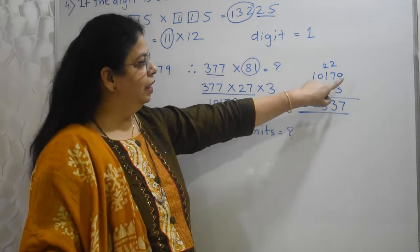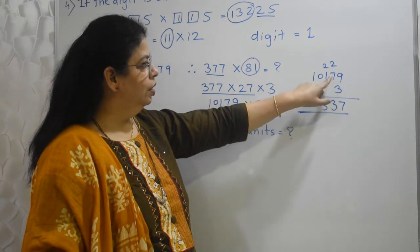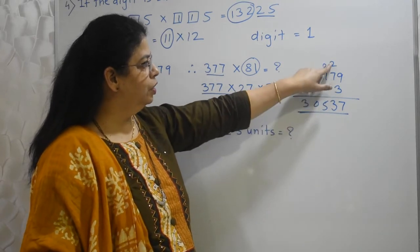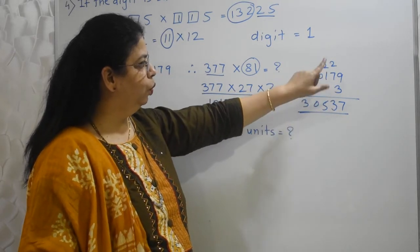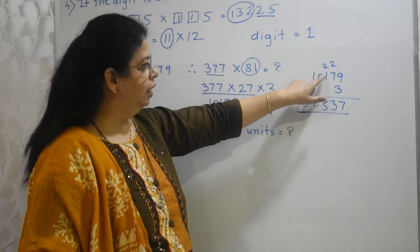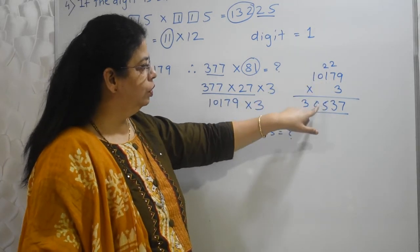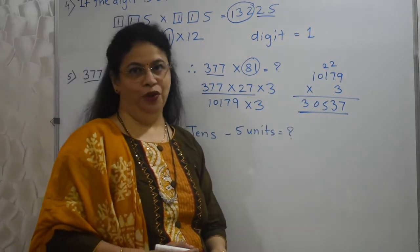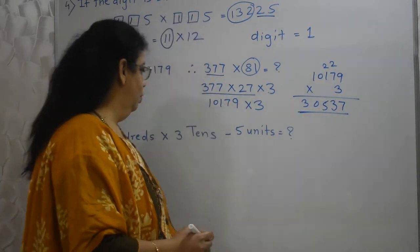27. This is the answer. 3, 9s are 27, 7, carry 2. 7, 3s are 21 plus 2, 23. So 3 here and 2 next. 3, 1s are 3 plus 2, 5. 3, 0s are 0. 3, 1s are 3. So this should be your answer. Got me?